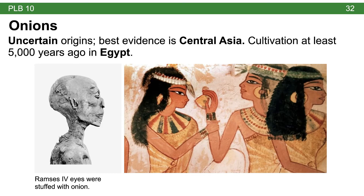Onions have somewhat uncertain origins, with the best evidence pointing to Central Asia, but their cultivation in Egypt is confirmed to be at least 5,000 years old. The evidence comes from two sources: many mummies were stuffed partly with onion, which was considered a special herb — Ramses IV's eye sockets were actually stuffed with onion — and there is extensive Egyptian artwork depicting the eating of onions.